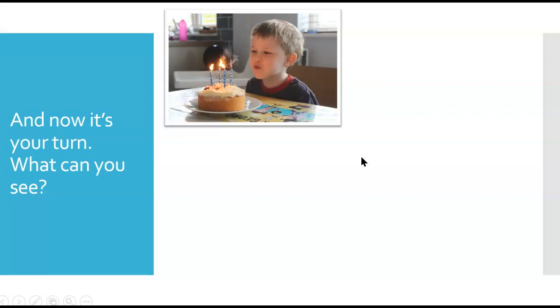Five, four, three, two, one. Here we go. It's a little boy blowing out birthday candles. Article, adjective, noun, and then a reduced relative clause with I-N-G.